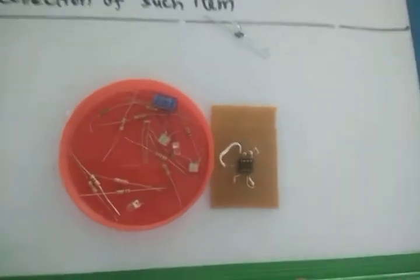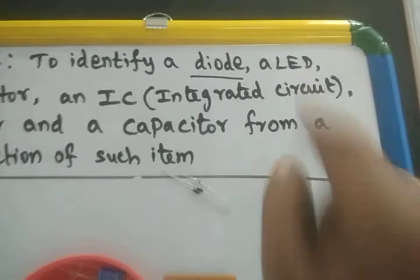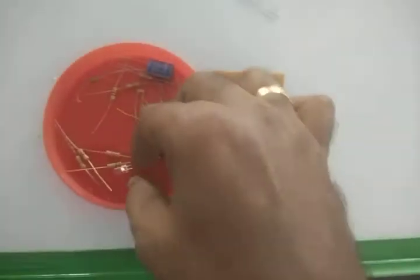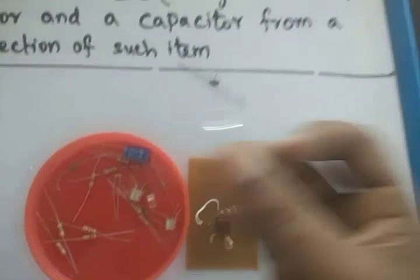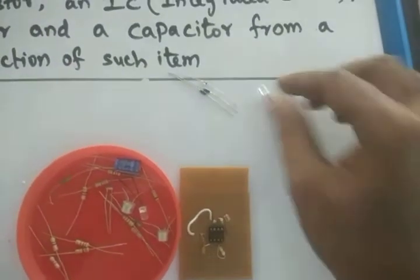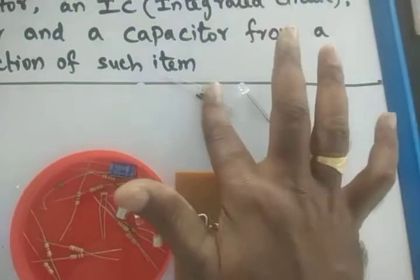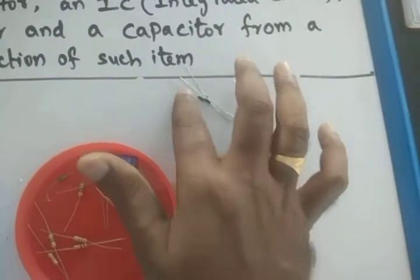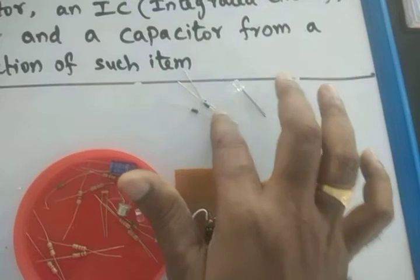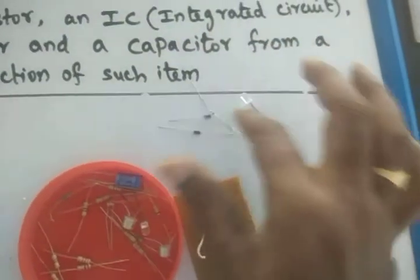Next is the LED. The LED bulb we have easily seen in our homes. This is a LED. LED means light emitting diode. If the external examiner asks what is LED, you have to say: LED means light emitting diode.